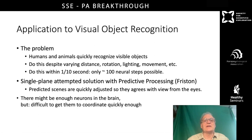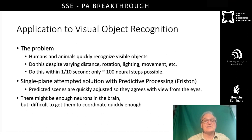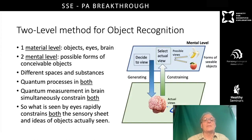Let's apply this to the question of visual object recognition. The problem is that humans and animals can quickly recognize visible objects despite varying distances, rotations, lighting, and whether they're moving or not. They seem to do this within one-tenth of a second, in which time only 100 neural steps are possible. Even frogs can recognize flies and their location. One single-plane or materialist attempted solution is that of Karl Friston's predictive processing. In this theory, predicted scenes are quickly adjusted so that they agree with the view from the eyes. There might be enough neurons in the brain to do this, but it's difficult to get them to coordinate quickly enough together.